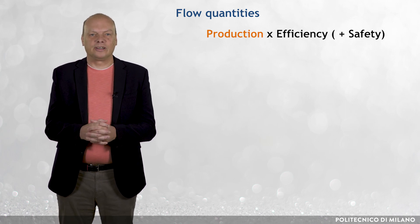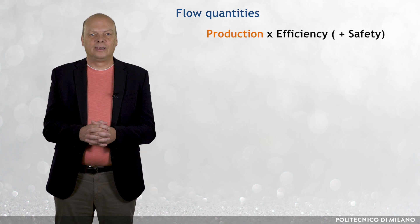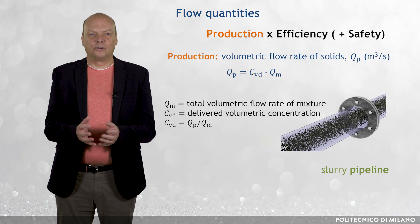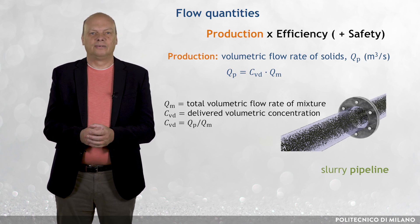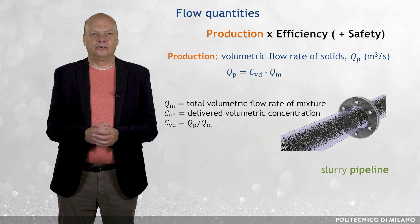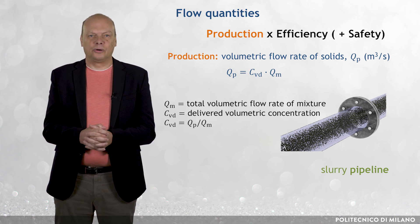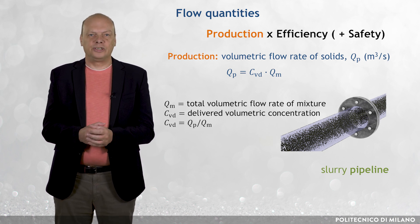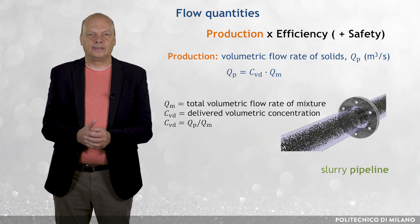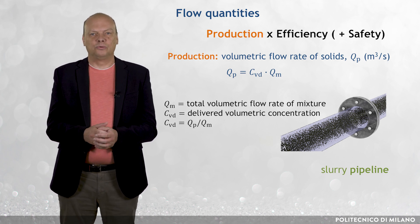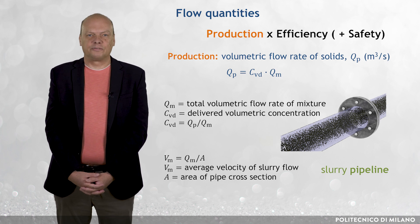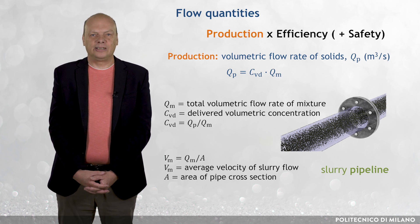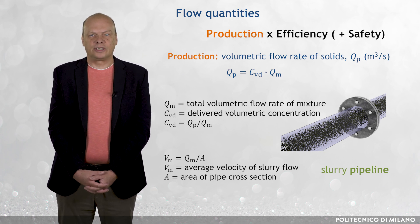In slurry transport, the solids are normally the payload, while the conveying liquid is only the vehicle. Hence, the volumetric flow rate of solids, Qp, is an important parameter and it is related to the total volumetric flow rate of mixture, Qm, through the delivered solids concentration, Cvd, which is defined as the ratio of the two flow rates. The average velocity of slurry flow, Vm, is obtained if Qm is divided by the flow cross-sectional area A.